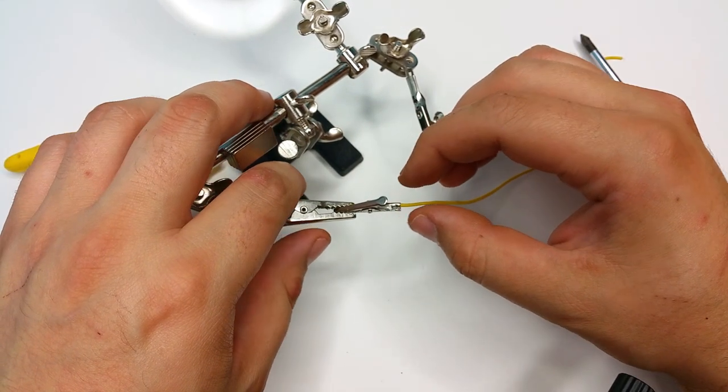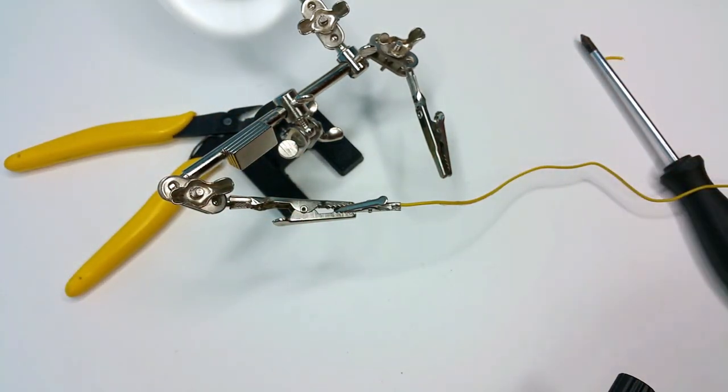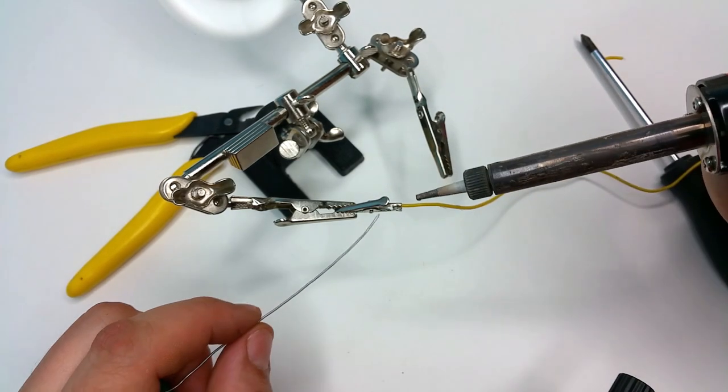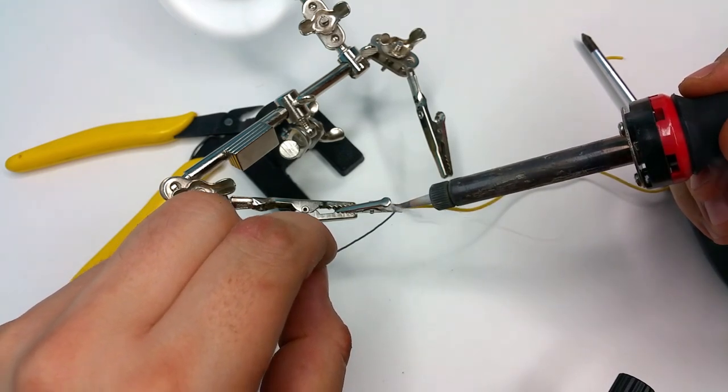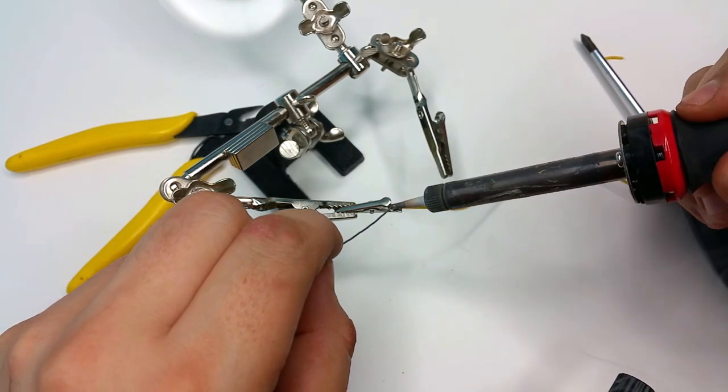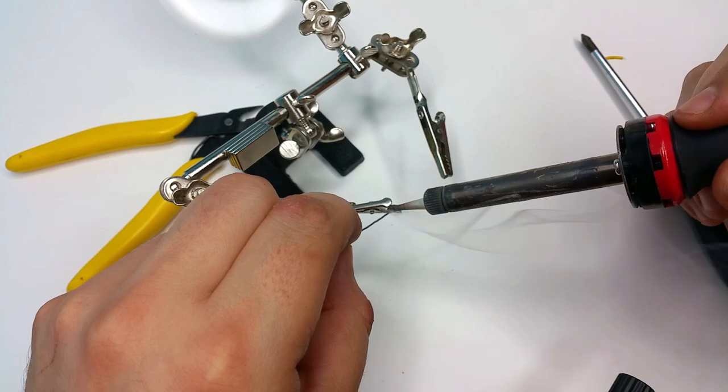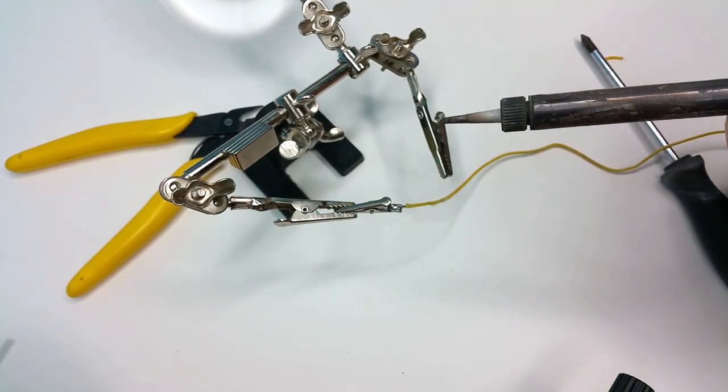put one crocodile clip in another crocodile clip, and I solder it. Just put a dab of solder so the wire holds onto the clip. Just a bit, and that should be plenty.